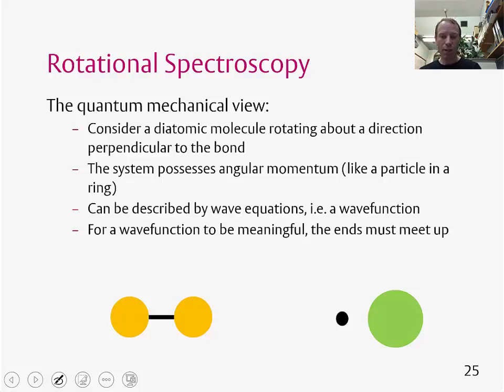If you think about a rotating system like this, a particle in a ring, only some of the wave functions are actually meaningful. For a particle in a ring wave function to be meaningful, the ends of the wave function must smoothly meet up. This means that not all wave functions are allowed, so we have only certain quantized energy levels.